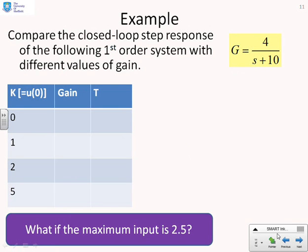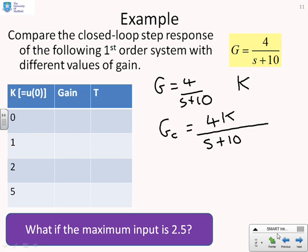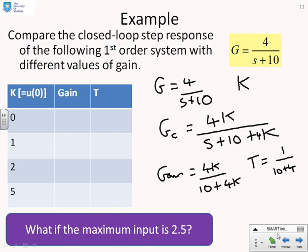Here's an example, just to go through slowly and see what we've got. We have G equals 4 over s plus 10, and I'm going to put a compensator K in there. Now I'll calculate the closed-loop transfer function. GC is going to be 4K over s plus 10 plus 4K.